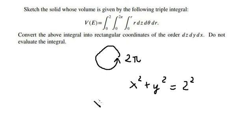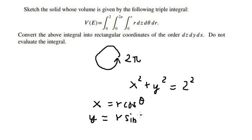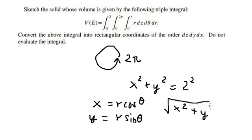So we know that x equals r cosine theta, and y equals r sine theta. If we want to get r only, it should be the square root of x squared plus y squared, and that is equal to r.